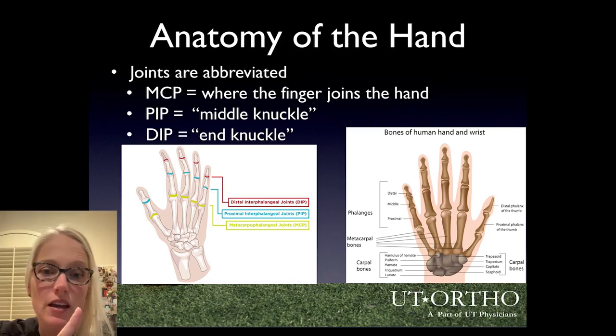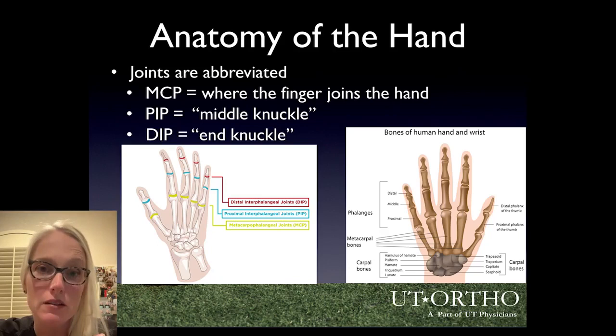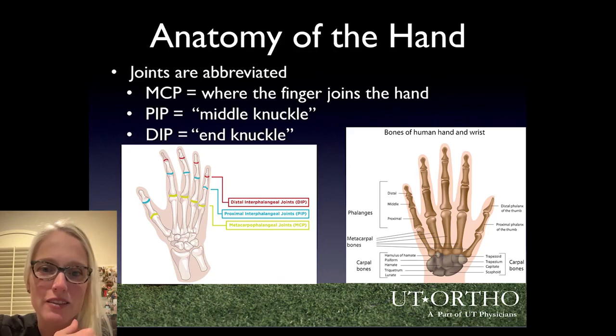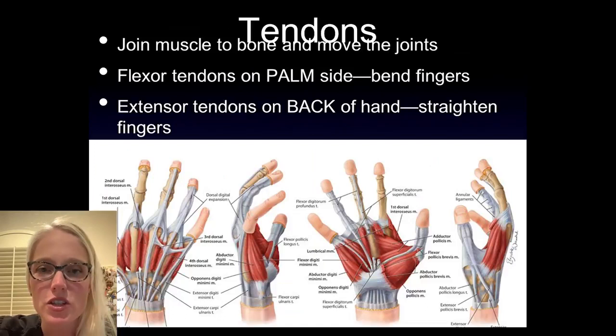We abbreviate the joints as follows: the MCP is where the finger joins the hand; the PIP is the middle knuckle; and the DIP is the end knuckle. The bones that comprise the finger are called the phalanges, or phalanx in the singular. The bones across the hand are the metacarpals, then the carpals at the wrist, and finally the radius and ulna.